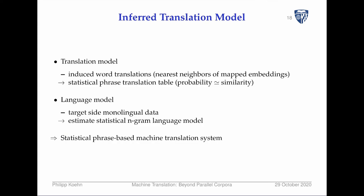Once we've matched up words, we can build a translation model — specifically a word translation model. For each word, we map it to the other language's embedding space and find the nearest neighbors, which are the most likely translations. Converting nearest-neighbor distances to probabilities gives us a statistical phrase translation table. Combined with a target-side language model, we have the two main components of a statistical phrase-based machine translation system.